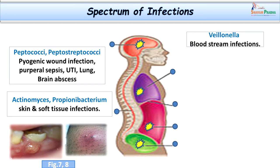Now let us consider the spectrum of infections caused by anaerobic bacteria. Gram-positive cocci — Peptococci and Peptostreptococci — are involved in causing pyogenic wound infections, puerperal sepsis (especially Peptococcus), urinary tract infections, lung infections, and brain abscesses. Other gram-positive bacilli such as Actinomyces and Propionibacterium are involved in skin and soft tissue infections. Gram-negative cocci — Veillonella — are involved in bloodstream infections.